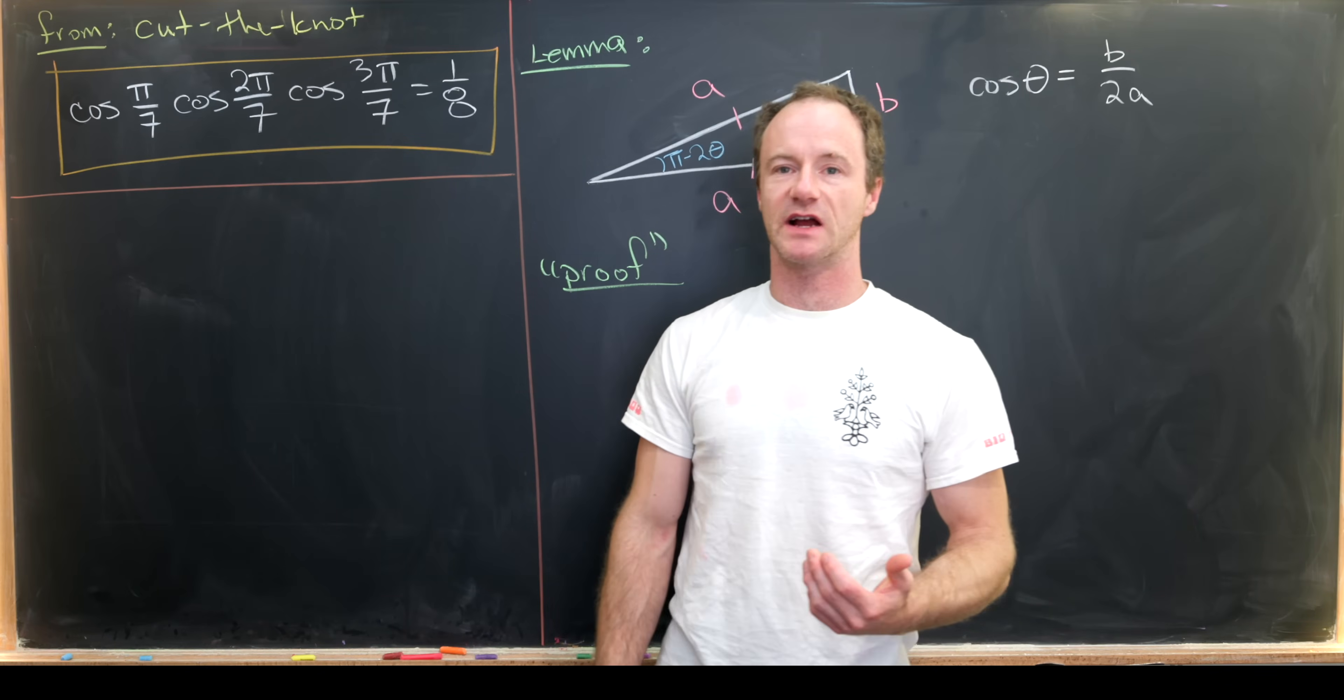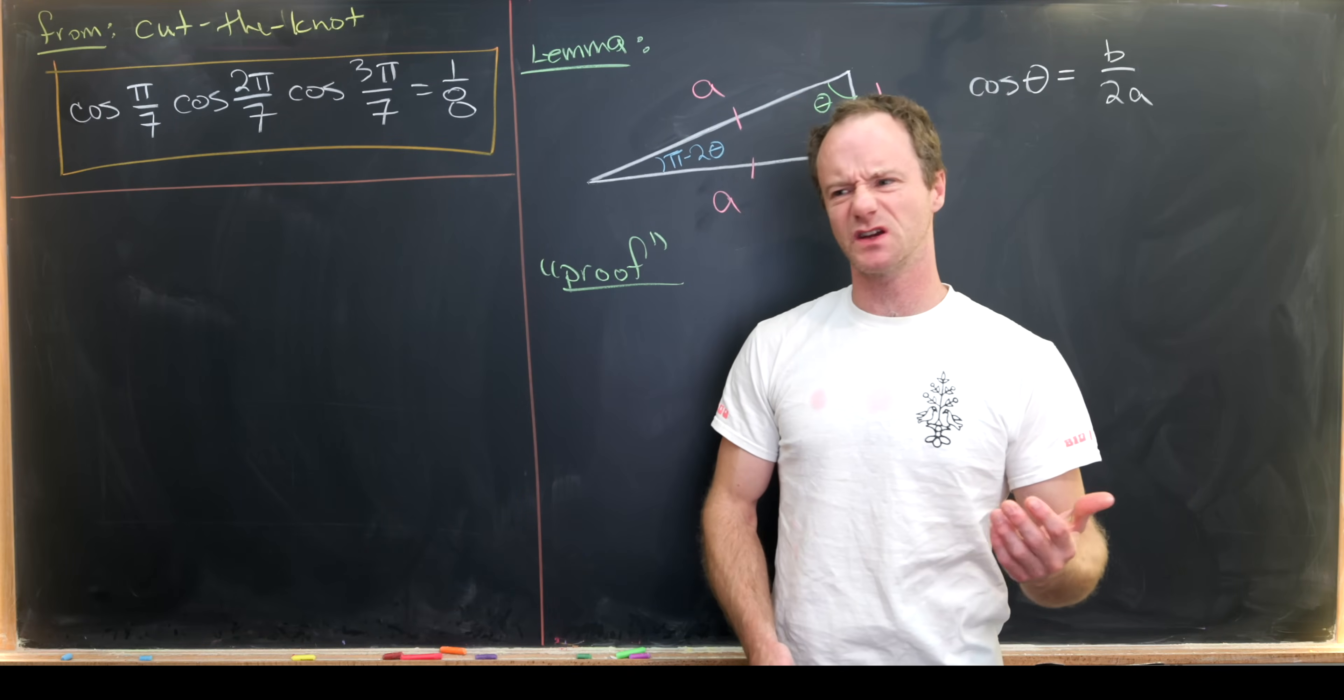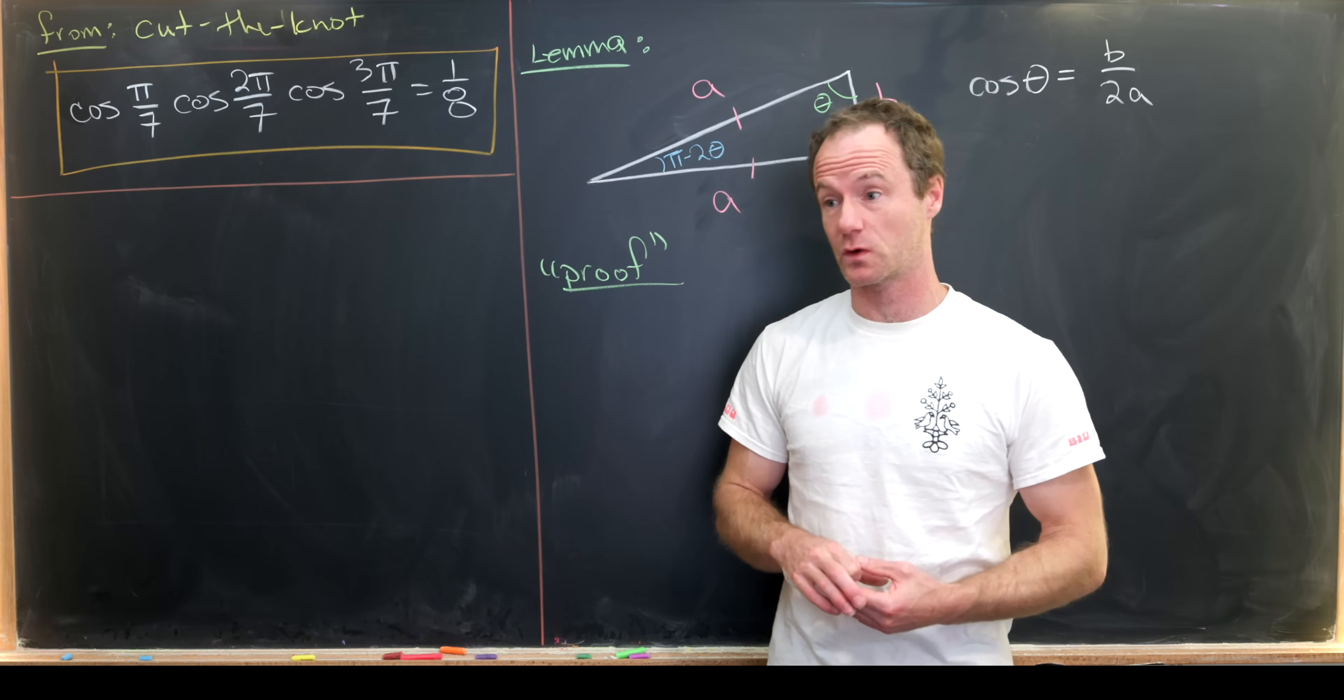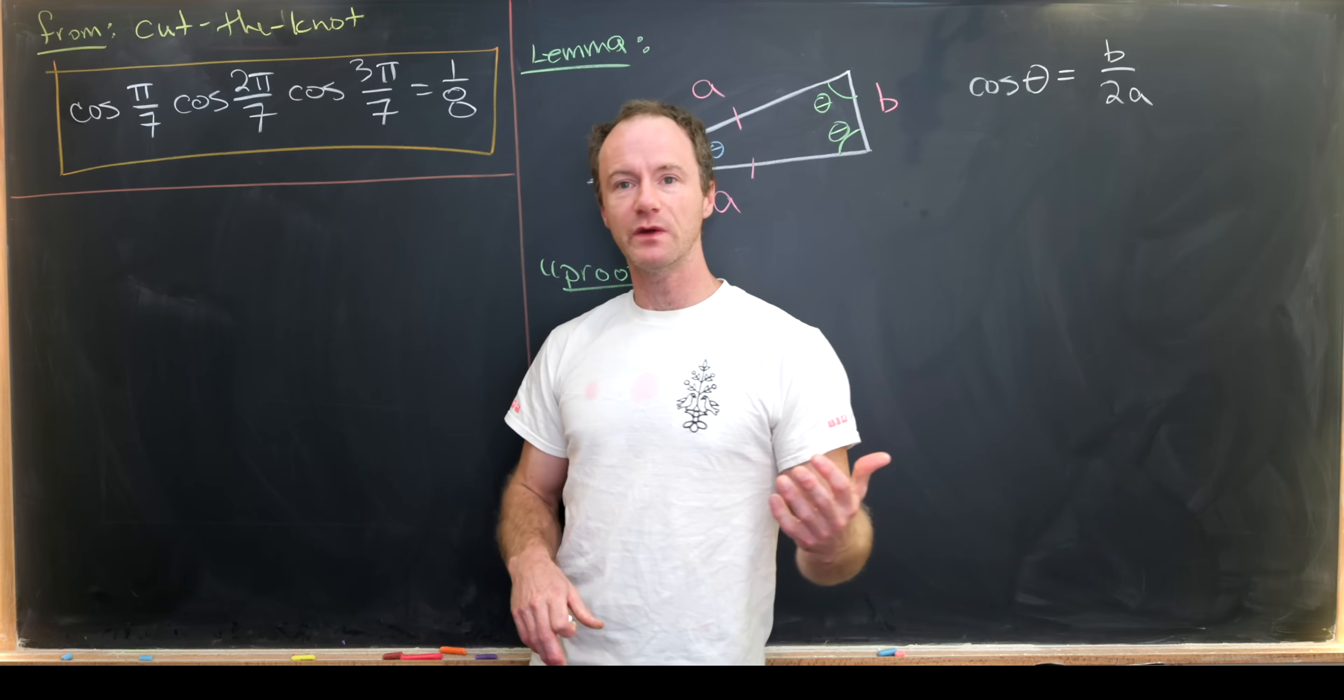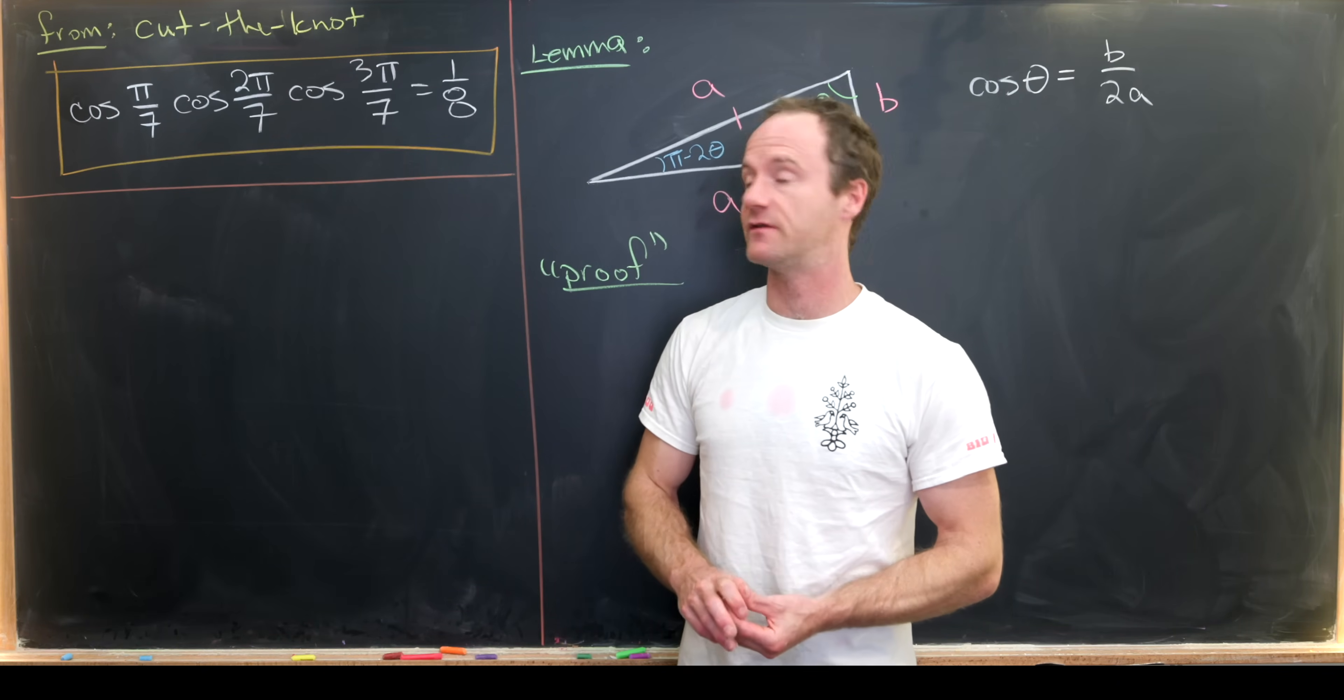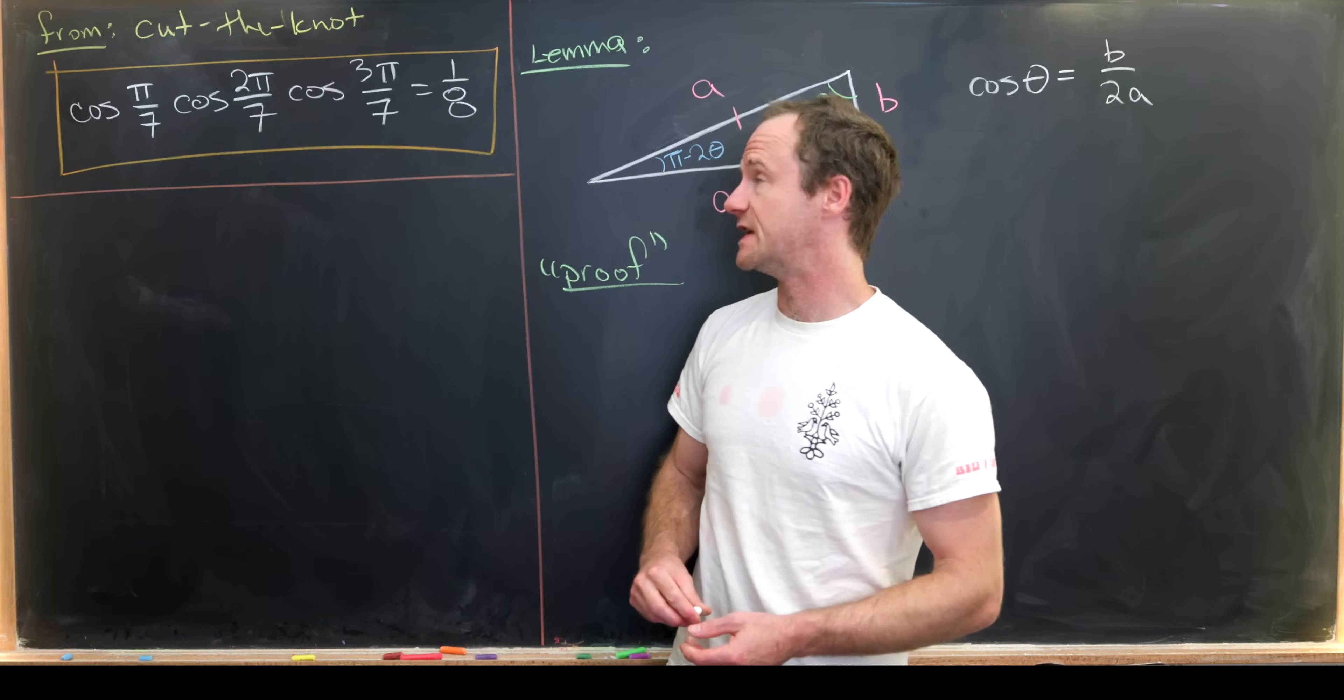Today we're going to look at a nice trigonometric identity. I saw this identity at cut-the-knot.org, which is a website that isn't really updated anymore but it's a really nice source for mathematical results. What we will prove is that the cosine of pi over 7 times the cosine of 2 pi over 7 times the cosine of 3 pi over 7 is 1 eighth.